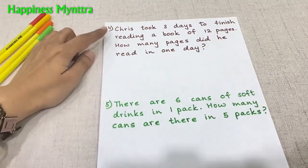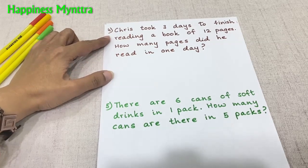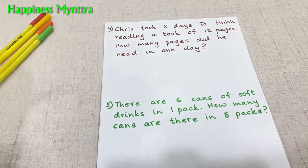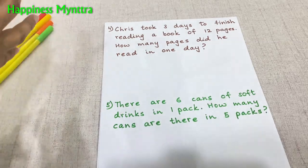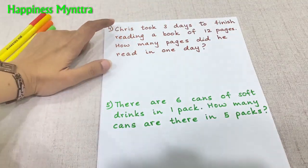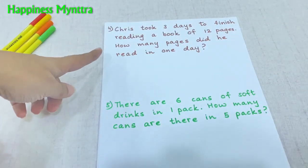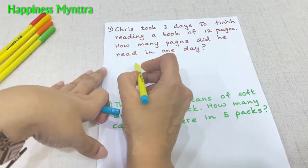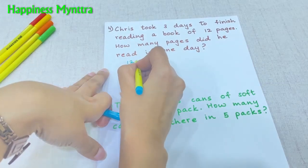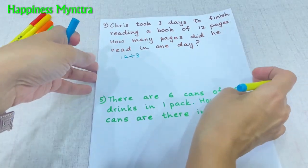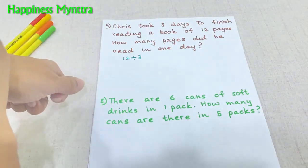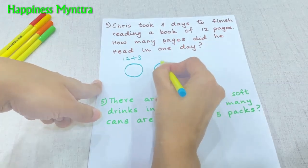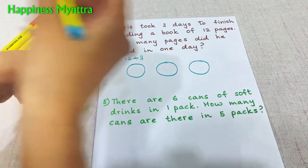Chris took 3 days to finish reading a book of 12 pages. How many pages did he read in one day? The first thing I want children to understand is whether the answer should be lesser or more. If in 3 days he reads 12 pages, we need to find out how many he reads in one day — so naturally the answer should be less than 12. We can do it pictorially: there are 3 circles representing the 3 days and we have 12 pages.